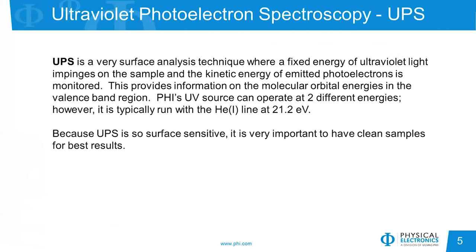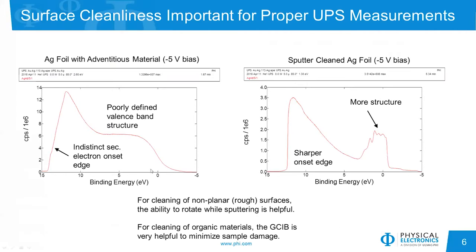Because UPS is so very surface-sensitive, it's very important to clean the samples to get the best results. If you have a little bit of carbon on the surface, you're going to get poor results. Here's an example showing that — we have a silver foil with some adventitious carbon on the outermost surface, and you see a very poorly defined secondary electron edge, as well as no structure in the valence band from 0 to 5 eV. Whereas after sputter cleaning the sample, we see a much sharper onset of the secondary electron edge and much more fine structure in the valence band.